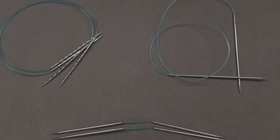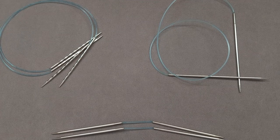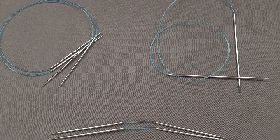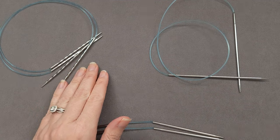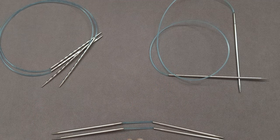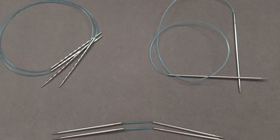The figure-8 cast on is usually used for projects that require small circumference knitting, like the toe of my sock, and there are a variety of different needle styles that can be used for small circumference knitting.